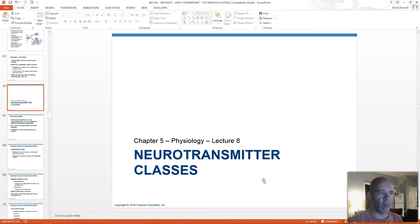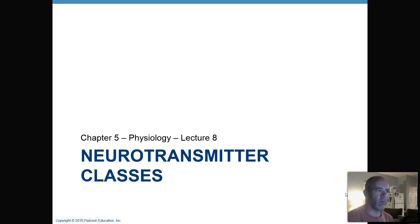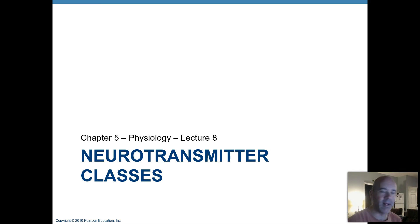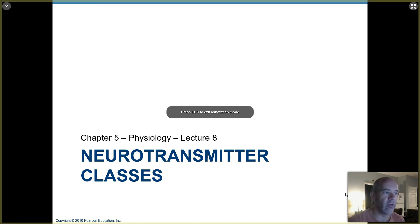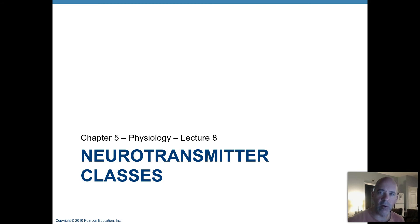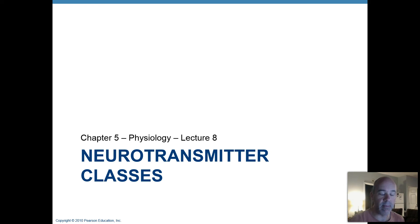This video lecture will cover neurotransmitters. When we were in unit 4 learning about the muscular system, we learned about one neurotransmitter called acetylcholine, which is secreted by motor neurons that control your skeletal muscles. But that is not the only type of chemical signal that can be secreted by neurons. Different neurons and different parts of the nervous system secrete different types of neurotransmitters. The overall purpose is the same — it's the chemical communicating molecule passed from one neuron to another.